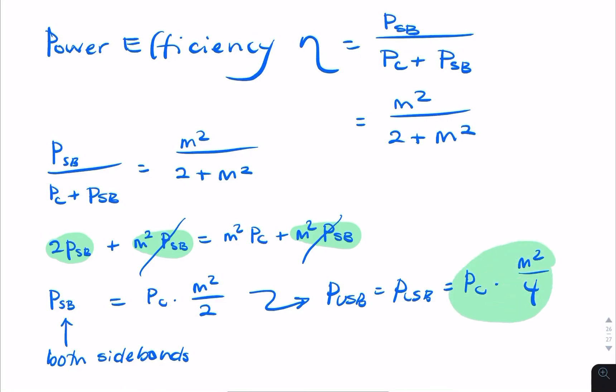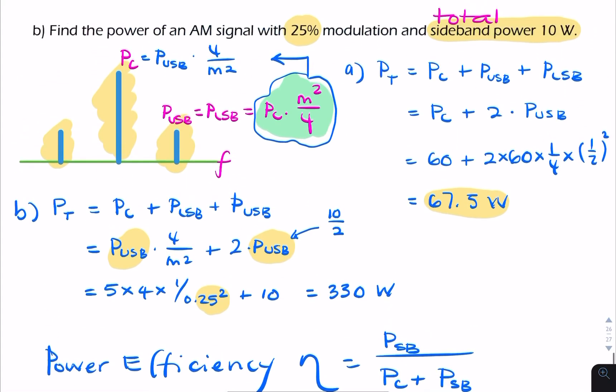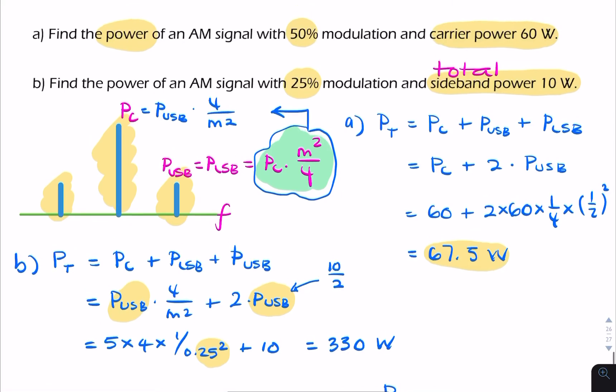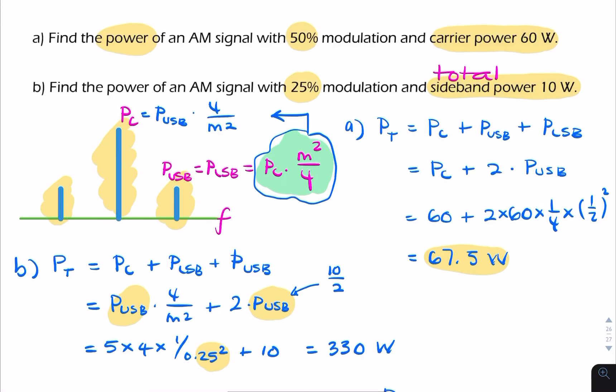That derivation didn't take long — you can derive it when you need it, or just use that relationship directly. So that is the final answer. That's how to deal with questions where you're given the carrier power or the total sideband power and asked to find the total power of the AM signal.